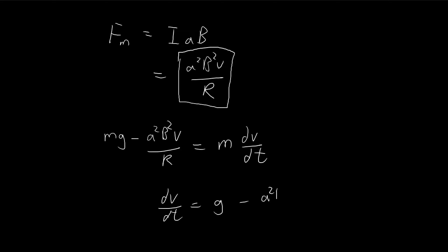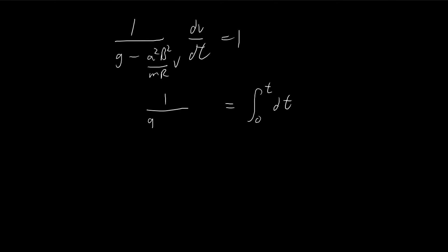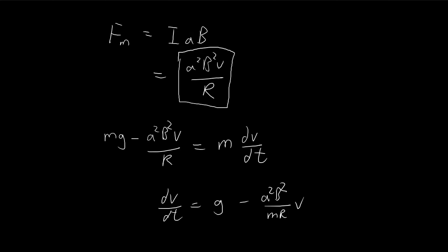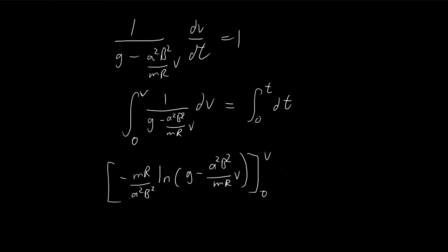Dividing through by m, we get the expression g minus (a²B²v)/(mR) equals dv/dt. Rearranging so that dv/[g − (a²B²v)/(mR)] equals dt, we integrate both sides with t going from 0 to t. On the velocity side, the initial velocity at time 0 is zero since the loop starts stationary, and it heads to some velocity v at time t.